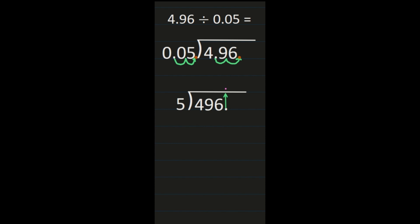I'll rewrite the problem and move the decimal up so it's in the right place in the quotient. I'm going to start with 49 divided by 5. 49 divided by 5 is 9. 9 times 5 is 45, and we subtract to get 4. Then I bring the 6 straight down and start the division step again. 46 divided by 5 is 9. 9 times 5 is 45. I subtract 45 from 46 and get 1.